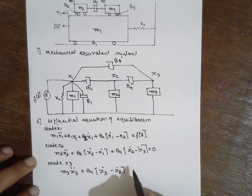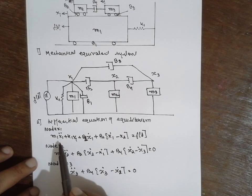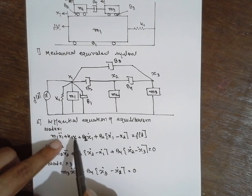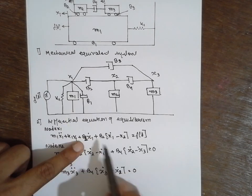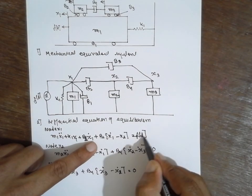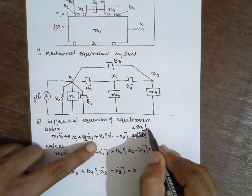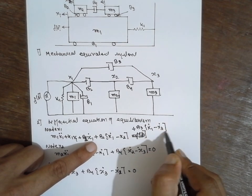One more time I will write this one. m1·ẍ1 + k1·x1 + b1·ẋ1 + b2·(ẋ1 - ẋ2) - I missed this part, I missed the upper part - plus b3·(ẋ1 - ẋ3) = F(t).